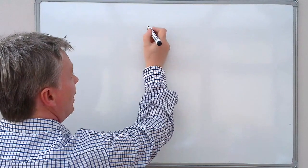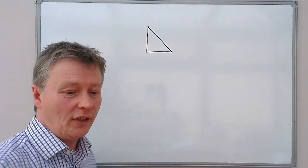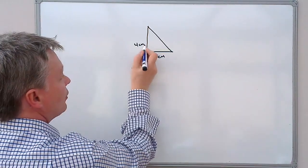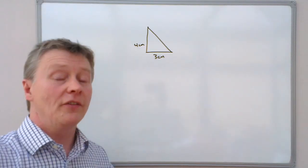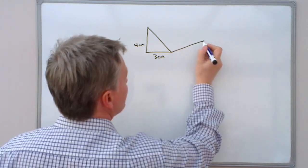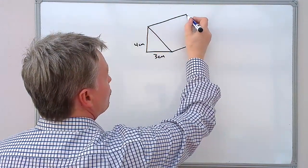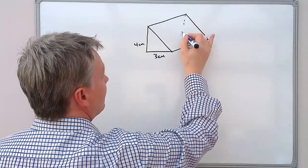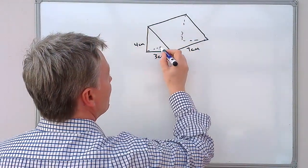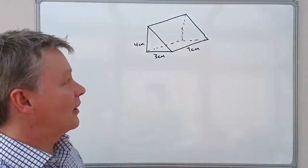So with this one we've got a triangle. The triangle itself is three centimetres by four centimetres and then the prism itself is seven centimetres long. So I'm just going to try and draw that up on the board. There you go. Hopefully you can see that. That's not too bad. That's a triangular prism.